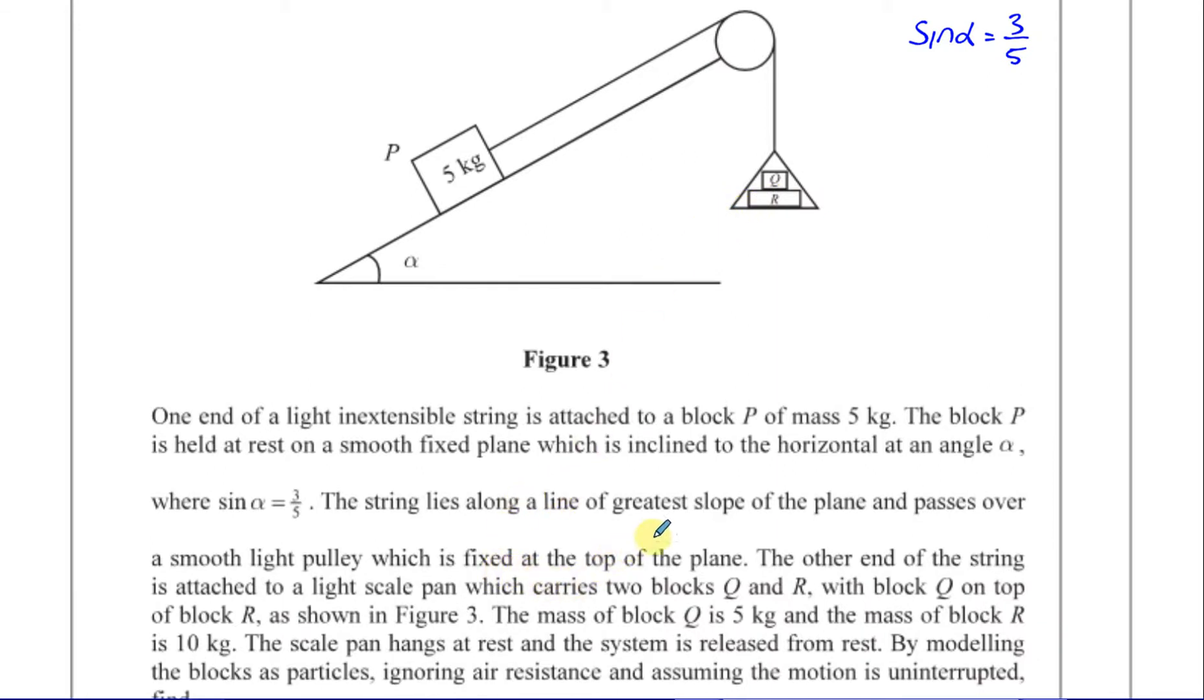The scale pan carries two blocks Q and R, with block Q on top of R, as shown in figure 3. The mass of block Q is 5 kg, and the mass of block R is 10 kg.